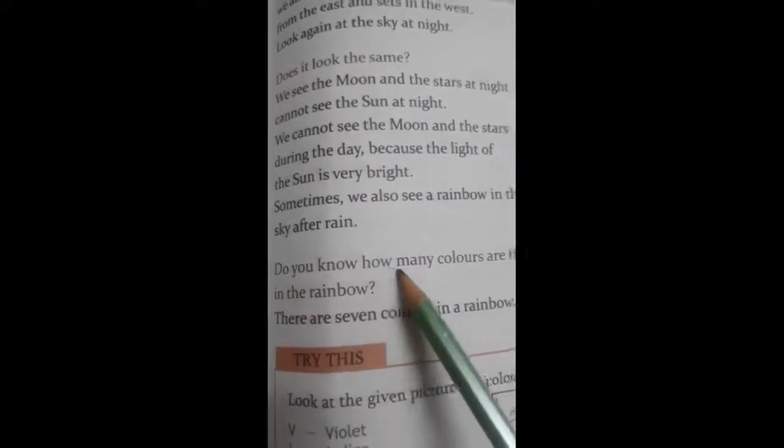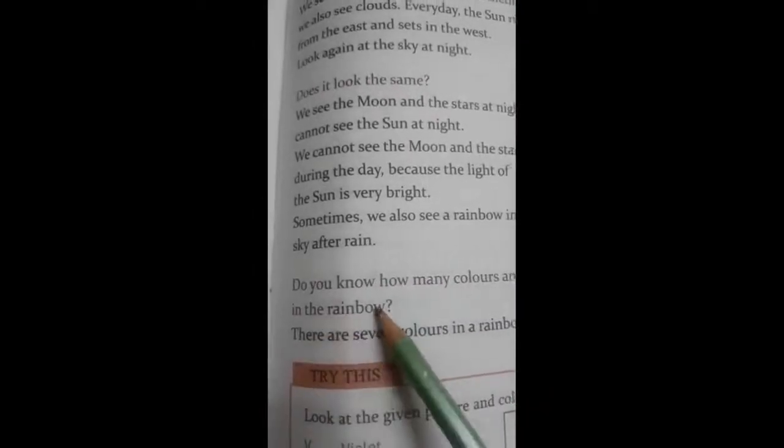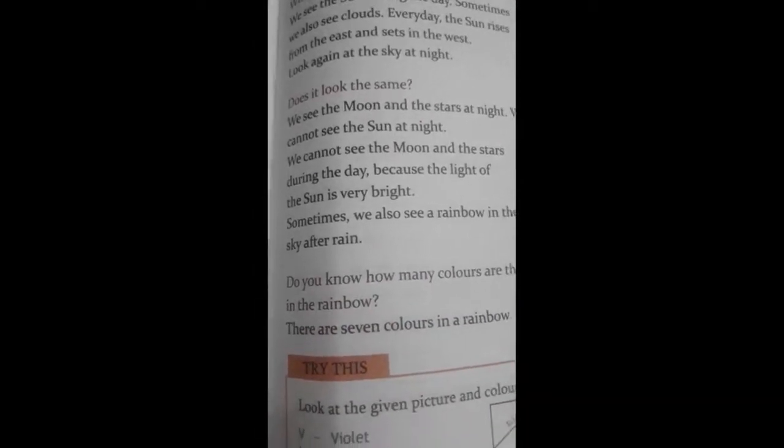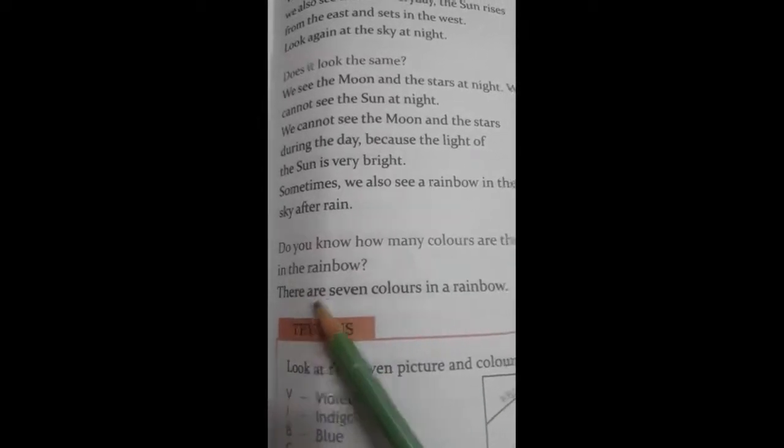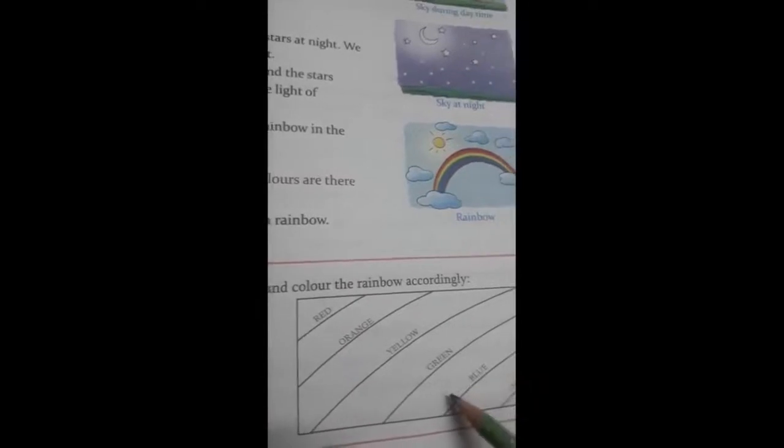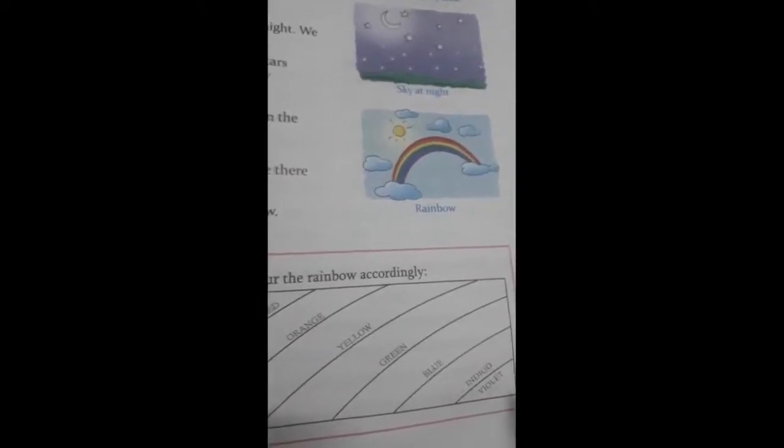Next, do you know how many colors are there in the rainbow? Let's see children. And you know children, in Hindi rainbow means Indra Dhanush. So there are seven colors in a rainbow. Try this. Look at the given picture and color the rainbow accordingly. This is for you children. Here you will fill red color, then orange, yellow, green, blue, indigo and violet.